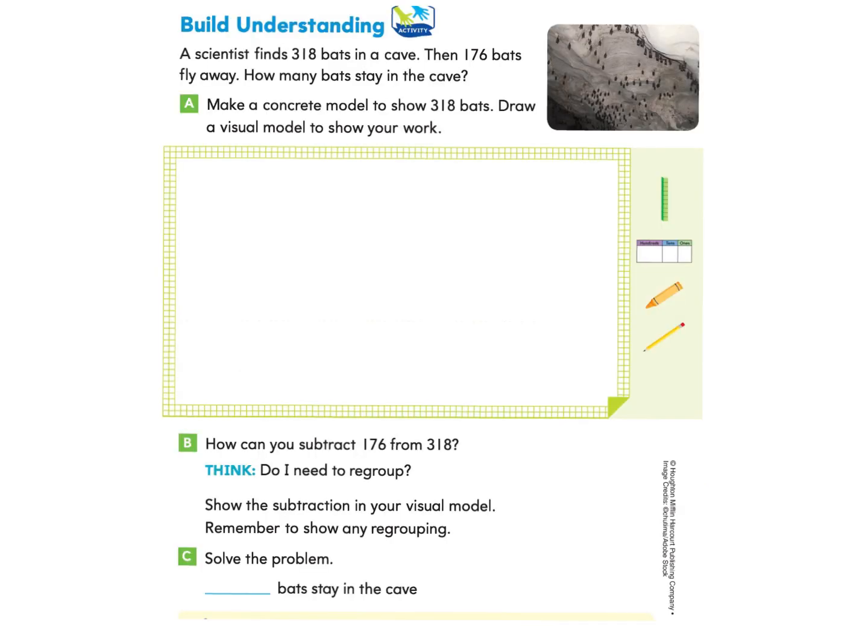We will begin under build understanding. A scientist finds 318 bats in a cave. Then 176 bats fly away, which means they leave. How many bats stay in the cave? Part A asks us to make a concrete model to show 318 bats. Draw a visual model to show your work. You can use cubes to show a model of the 318 bats and then come back and draw a visual model with me.